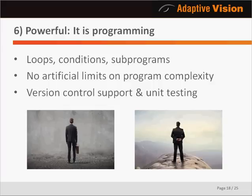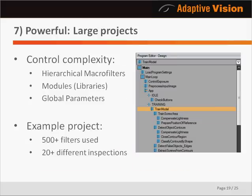Adaptive Vision Studio also supports good practices of professional software engineering. The project files have textual formats, making them well suited for management with version control systems like Subversion or Git. There are also assertion filters and a possibility to create additional programs within a single project, making it possible to implement unit testing routines for your machine vision solutions. Programs are also unlimited in terms of size — with hierarchical macrofilters and global parameters it is easy to control growing program complexity. We have seen real-world projects consisting of over 500 filters performing over 20 different inspections within a single system. The macrofilter hierarchy can be displayed as a tree-like view so you clearly see the big picture of your project. Furthermore, when you deliver many projects featuring similar subprograms, you can create modules which are libraries of your common macrofilters, allowing you to reuse work easily between projects without recreating similar routines from scratch.